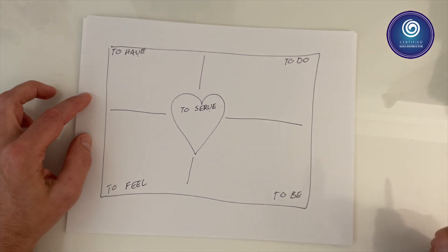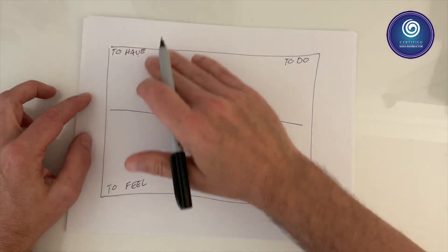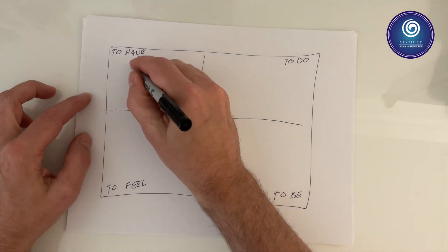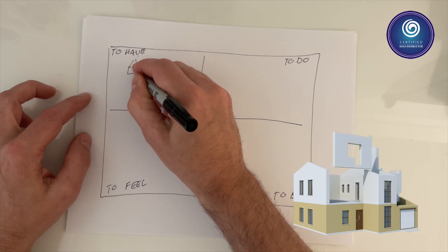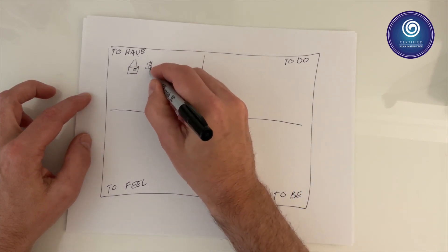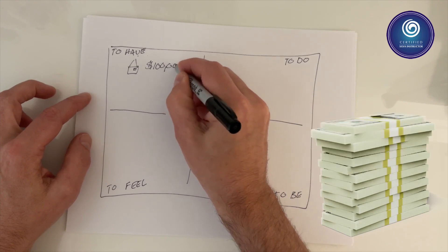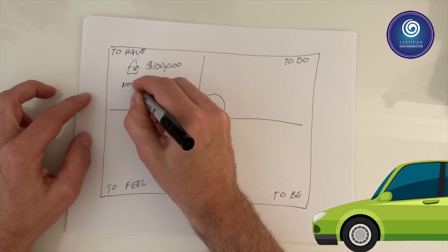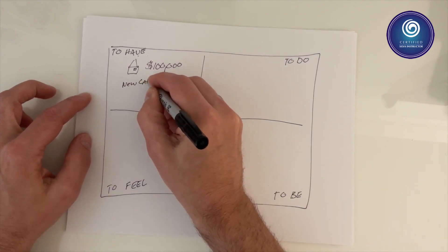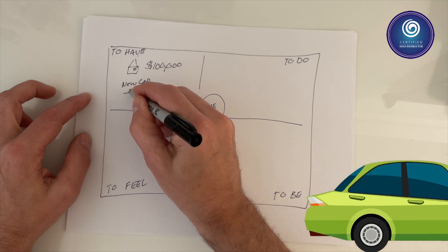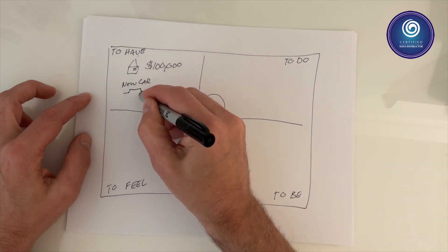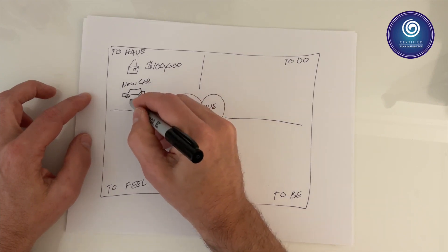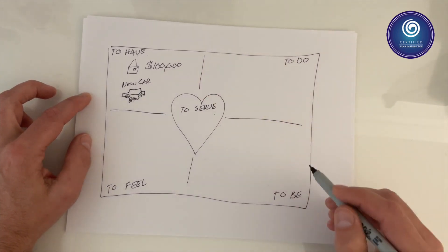Now, one by one, think of the things in your life that you want to have - these are physical things, material things. You can draw a house, you can write it down as money, you can say new car, you can draw the car, you can put the type of car at the bottom.